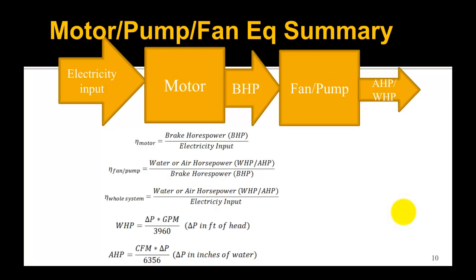First let's look at a general overview of a motor and a fan pump system. The input is electricity to the motor, and the motor is less than 100% efficient, so we get a little less energy out in terms of brake horsepower. That is basically a shaft that turns the fan or the pump, and the output is the moving air or water, which we measure using terms called air horsepower and water horsepower.